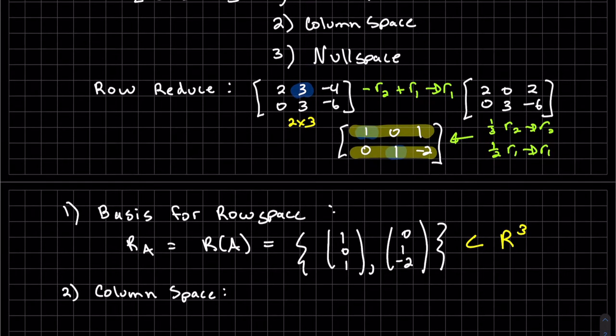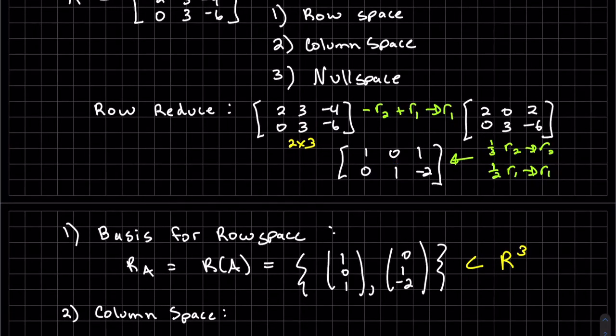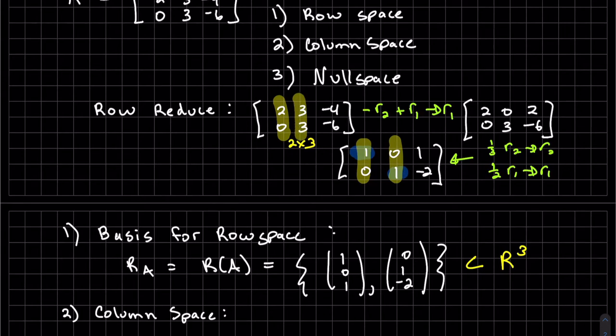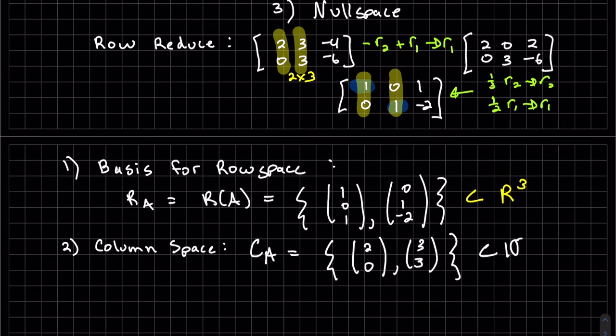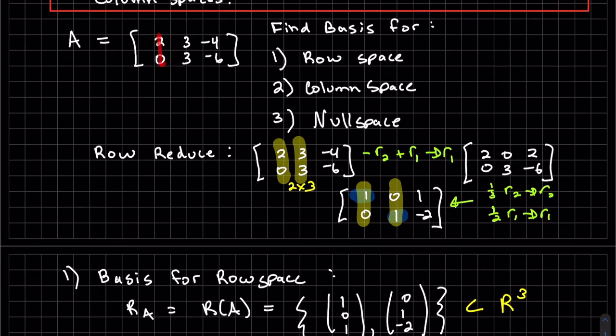So just to point out here, we had our leading coefficients of one, so both of those rows, since they have a leading one in the row, are our bases for the row space. Now the column space, since we row reduced, we have to go back to the original matrix. These are called our pivots, with these ones. We look at these two columns, but we use the original matrix and the original corresponding columns, which is a subset of R2. Again, for our column space, we have to go back to our original A.